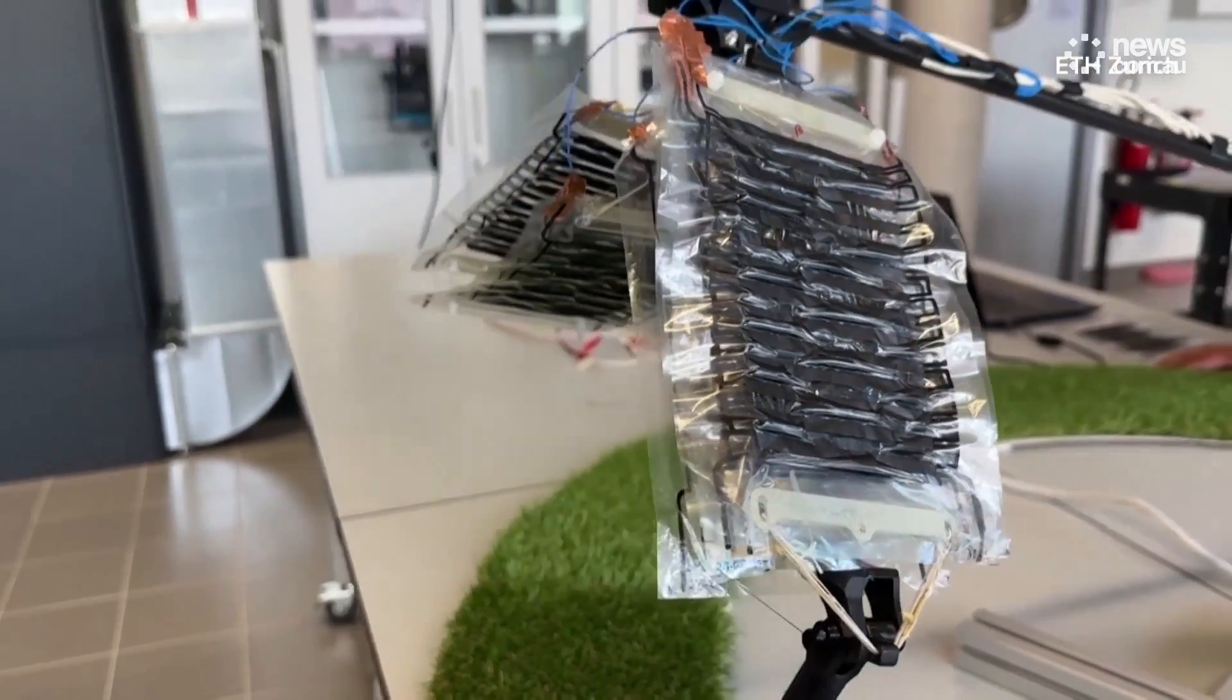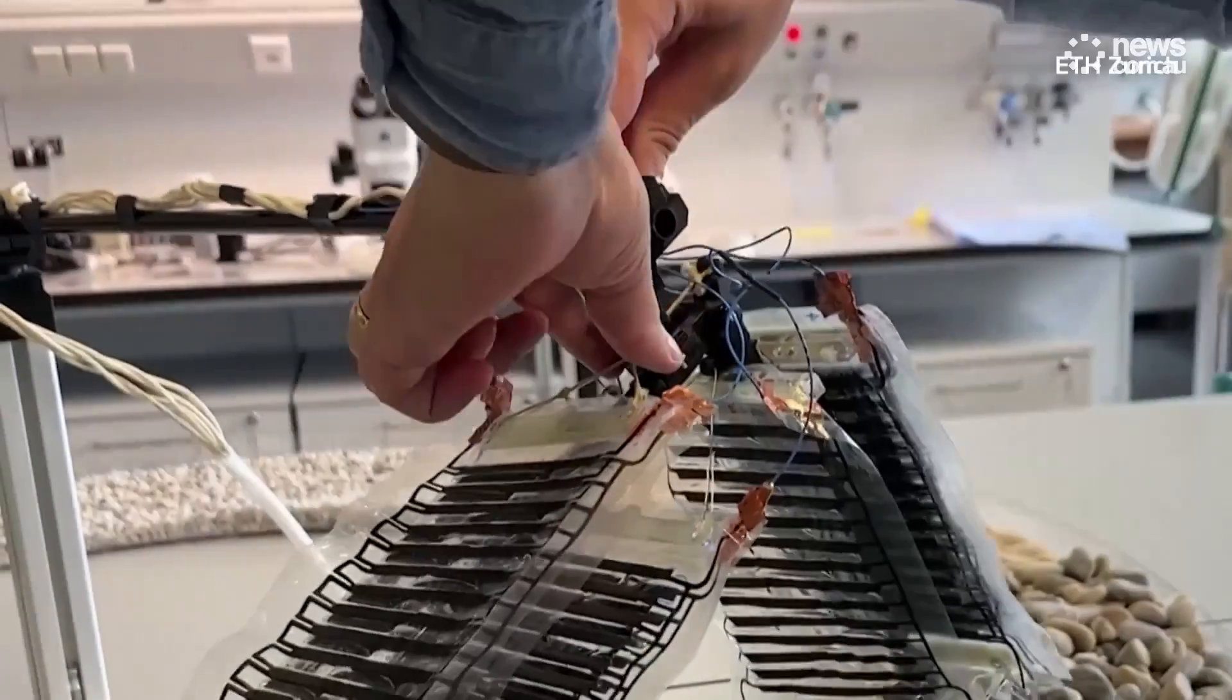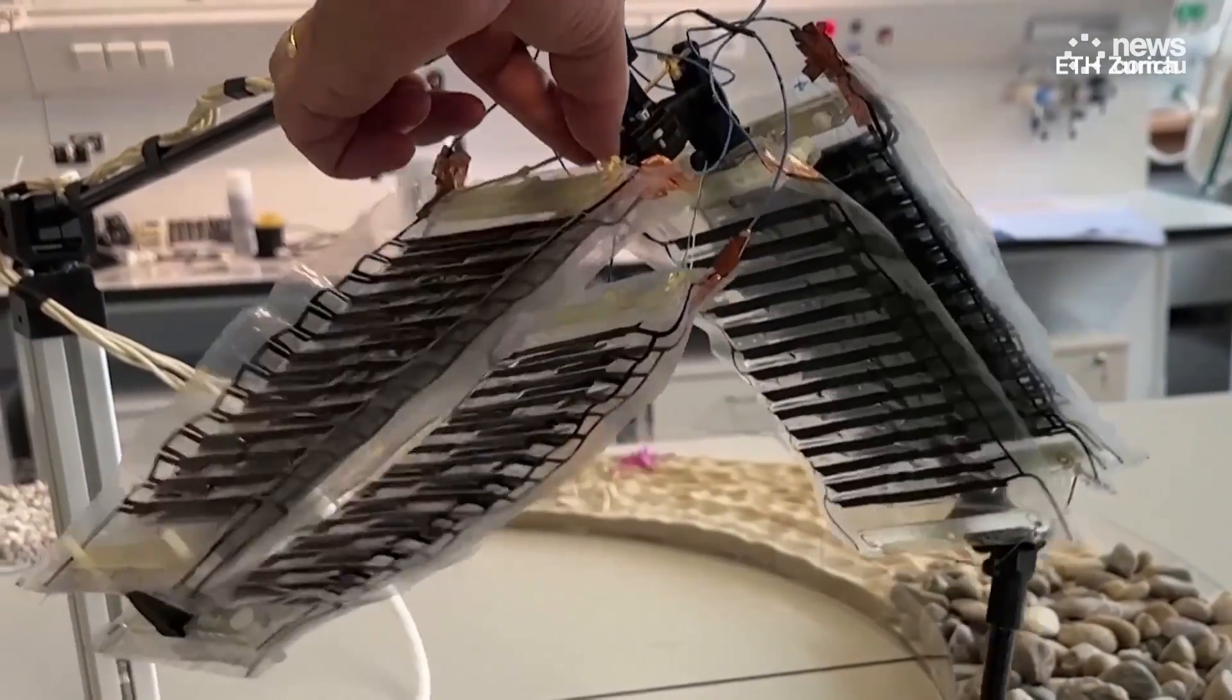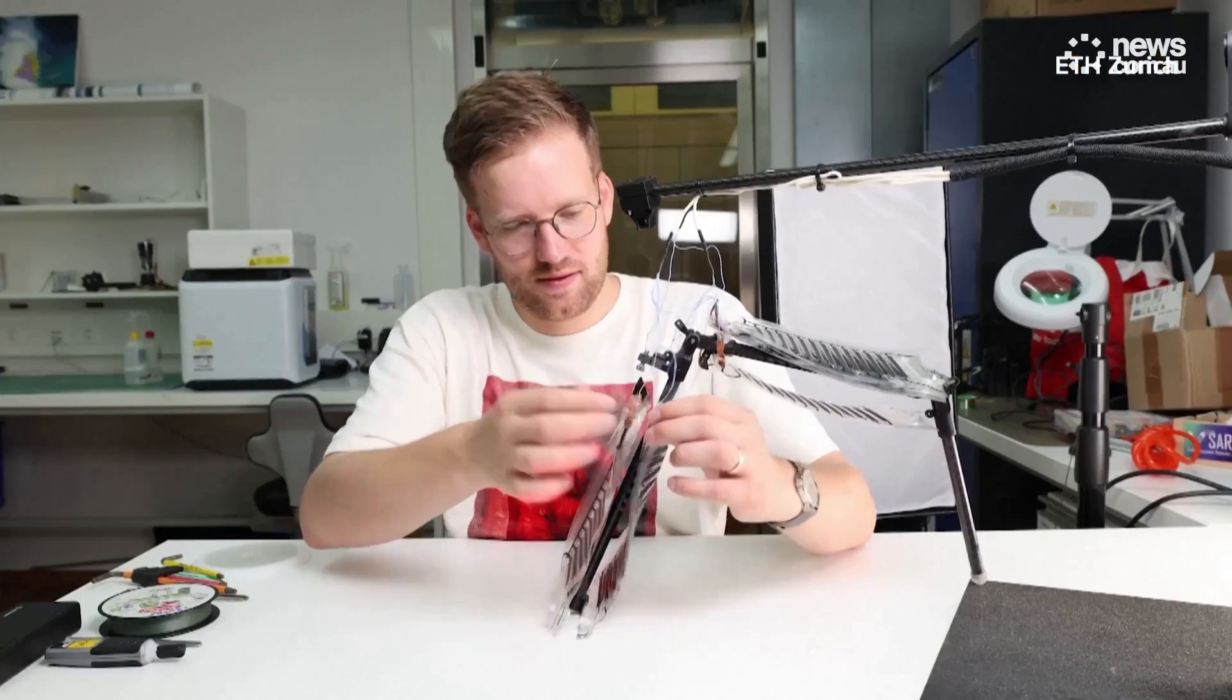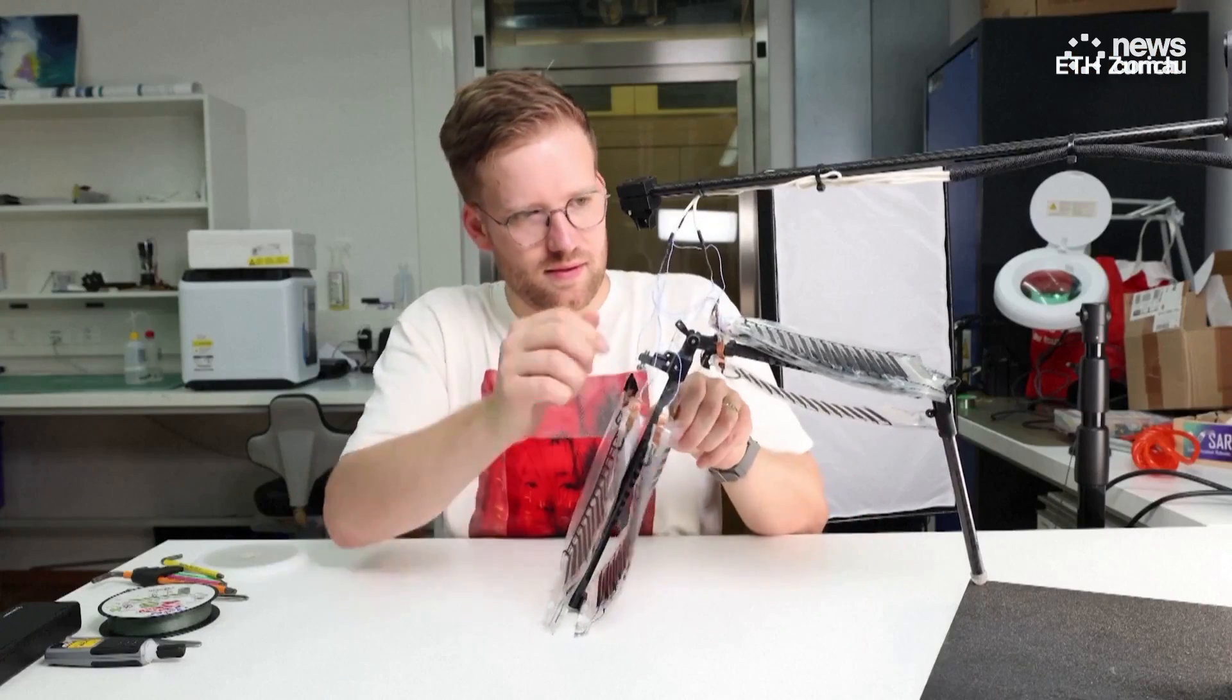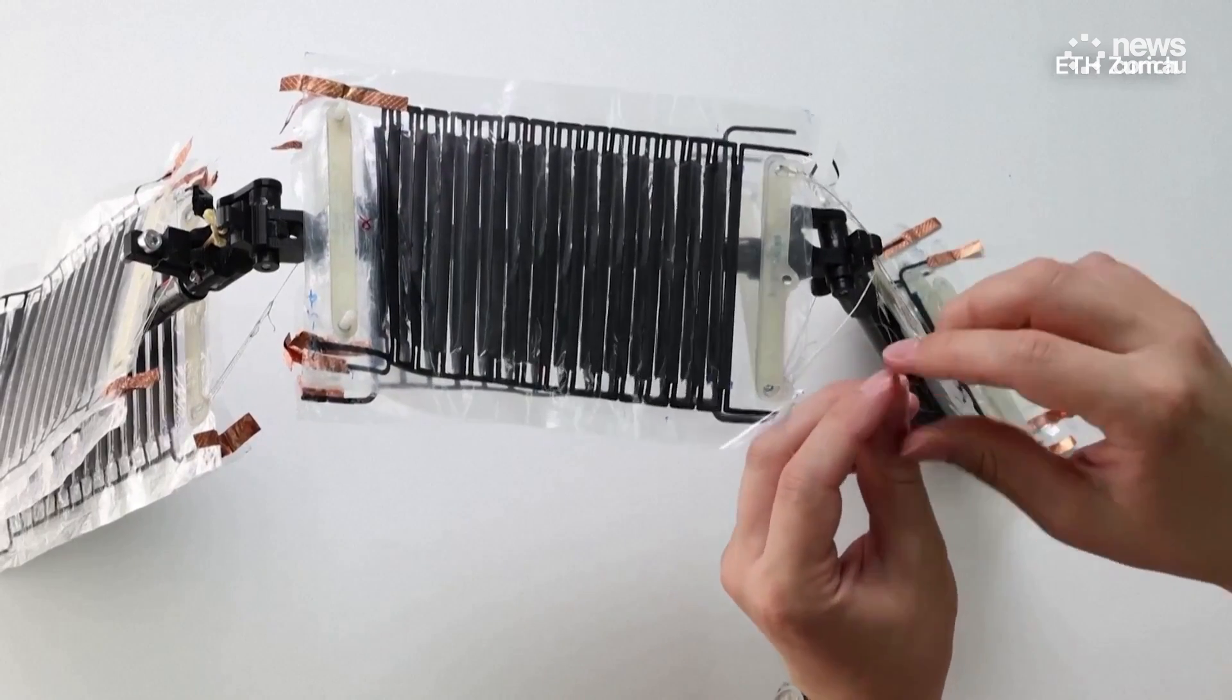The research was published in the Nature Communications Journal. And while the technology is still in its early stages, the team is already envisioning its potential applications. Buschner imagines a future where battery-powered robots equipped with artificial muscles could be deployed for tasks like rescue operations.